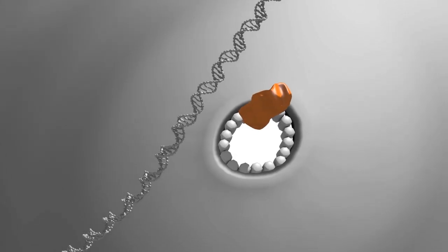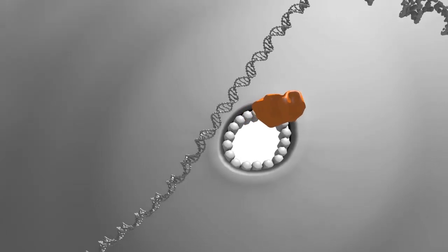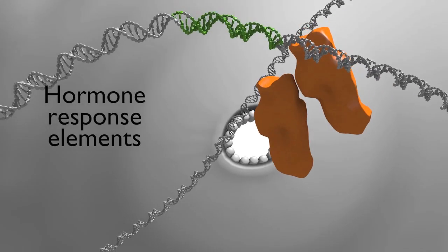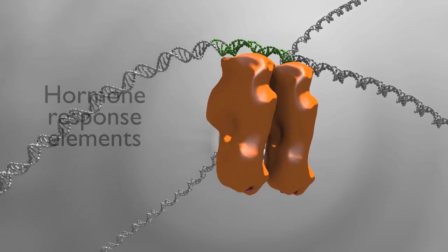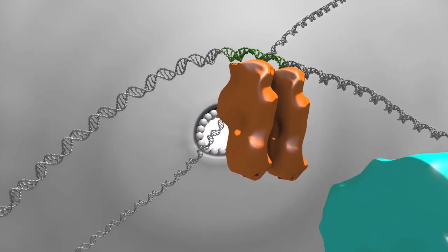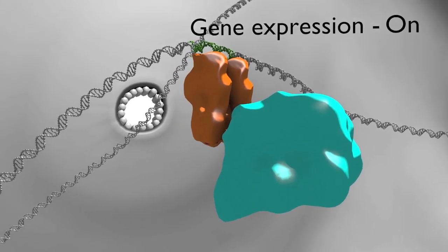The nuclear receptor can now translocate into the nucleus and bind to DNA sequences known as hormone response elements. The DNA binding domain recognizes the hormone response element, while the ligand binding domain recruits a co-activator complex that activates the downstream gene.